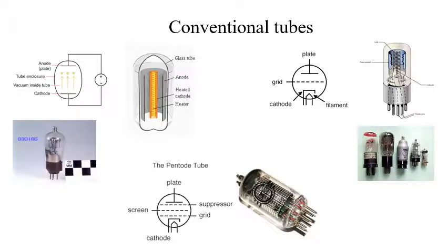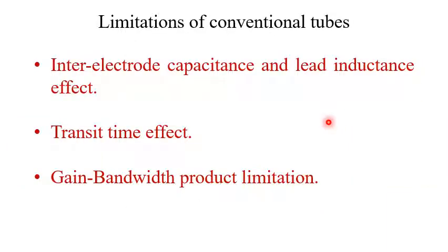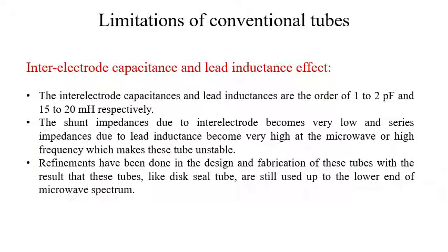When considering microwaves, there are several problems associated with these types of tubes. The first limitation is inter-electrode capacitance and lead inductance effect. The inter-electrode capacitance and lead inductances are on the order of 1 to 2 pF and 15 to 20 mH respectively. The shunt impedances due to inter-electrode capacitance become very low, and series impedances due to lead inductance become very high at microwave frequencies, making these tubes unstable.